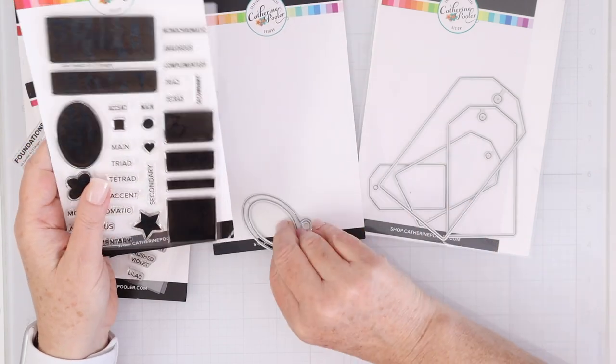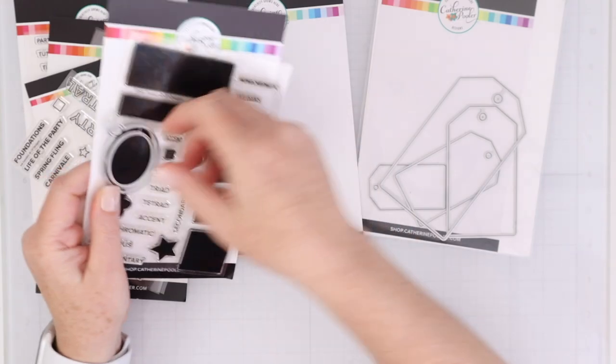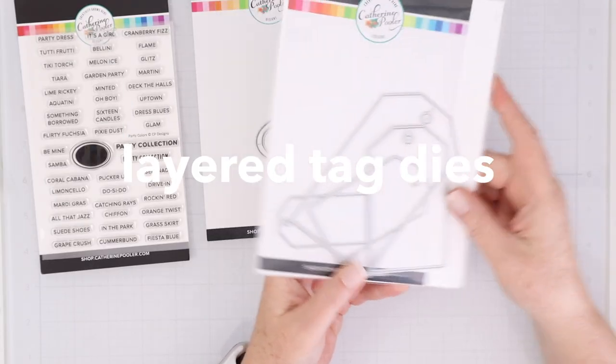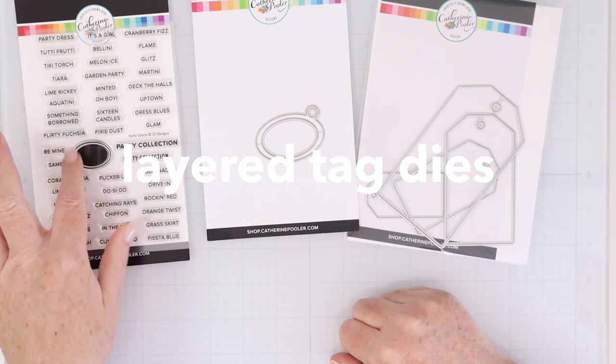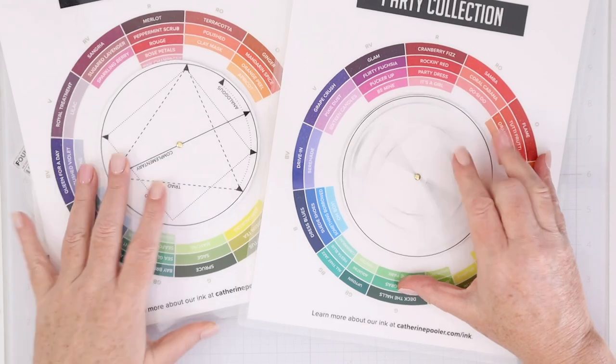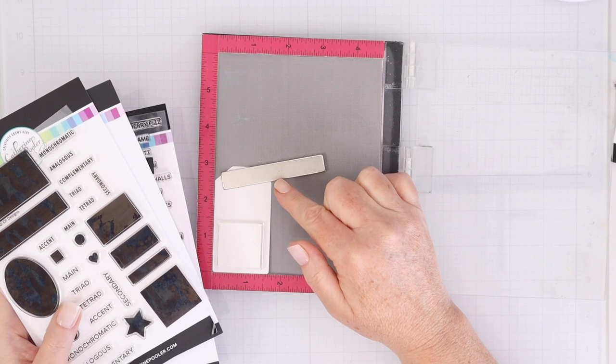This is the ink swatch tag die and you can see that it cuts out that oval from the ink swatch stamp set perfectly, and then also cuts out a base with a ring. And there's also - I used layered tag dies to create my swatches, so I use one of the layered tag dies here to cut out.